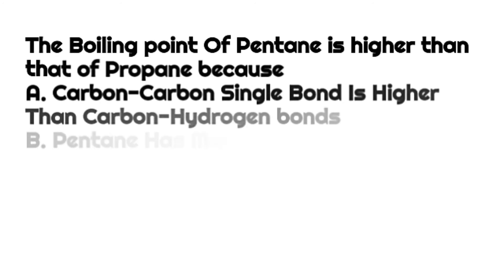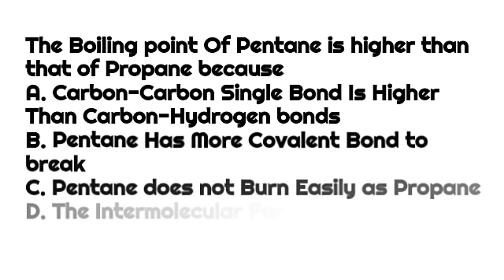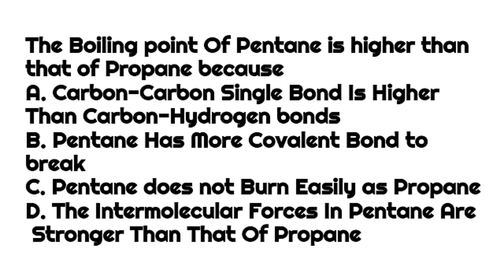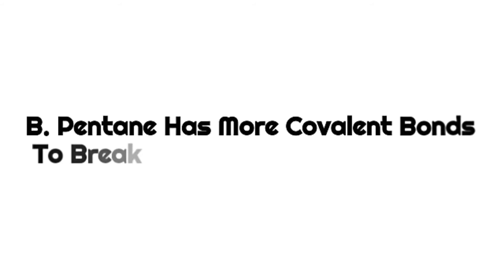The boiling point of pentane is higher than that of propane because — a) carbon-carbon single bond is higher than carbon-hydrogen bond, b) pentane has more covalent bonds to break, c) pentane does not burn as easily as propane, d) the intermolecular forces in pentane are stronger than that of propane. The answer is b) pentane has more covalent bonds to break.